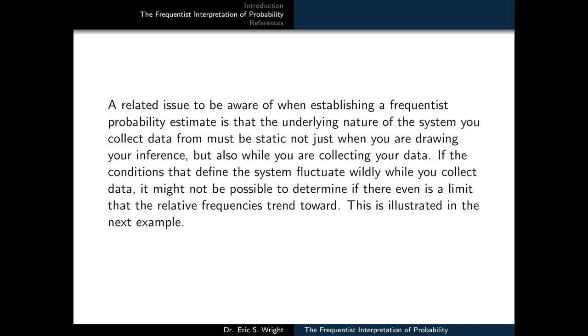A related issue to be aware of when establishing a frequentist probability estimate is that the underlying nature of the system you collect data from must be static not just when you are drawing your inference, but also while you are collecting your data. If the conditions that define the system fluctuate wildly while you collect data, it might not be possible to determine if there even is a limit that the relative frequencies trend towards. This is illustrated in the next example.